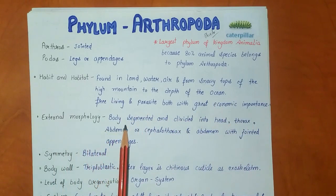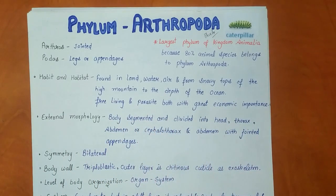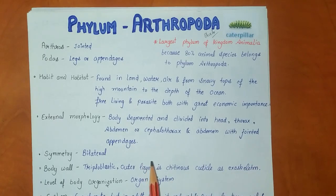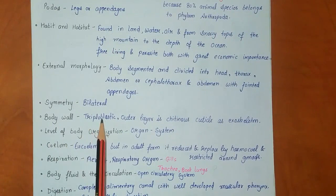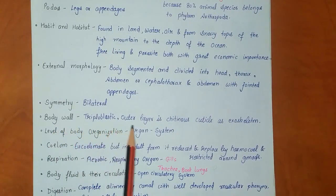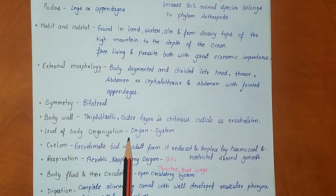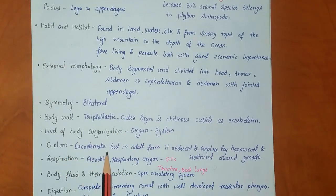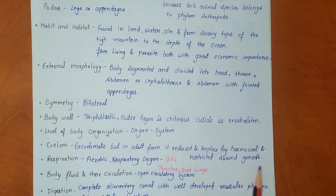External morphology: the body is segmented and divided into head, thorax, and abdomen, or cephalothorax and abdomen, with jointed appendages. Symmetry is bilateral. Body wall is triploblastic; the outer layer is a chitinous cuticle acting as an exoskeleton. Level of body organization is organ system. They are eucoelomates, but in adult form the coelom is reduced and replaced by haemocoel, restricted around the gonads.